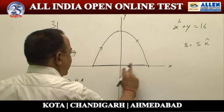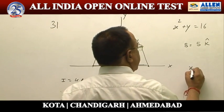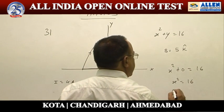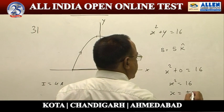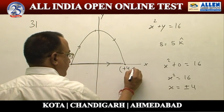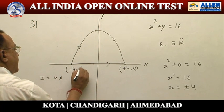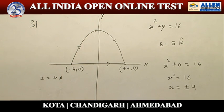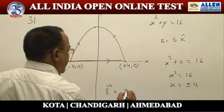Let us calculate the coordinates of the starting point and end point. At the x-axis, the y-coordinate is 0. Putting y = 0: x² + 0 = 16, giving x² = 16, so x = ±4. That means one point has coordinates (+4, 0) and the other has coordinates (−4, 0).